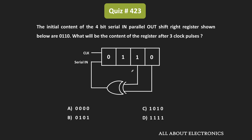In this question, we have been given a 4-bit shift register, and we have been asked to find the content of the register after 3 clock pulses. We have been given the serial-in parallel-out type of shift register, where these two outputs are XORed using an XOR gate, and the output of the XOR gate is given to the serial input.